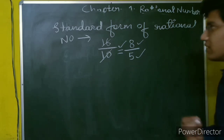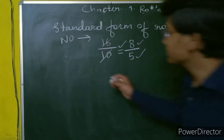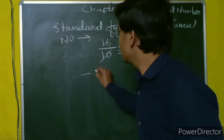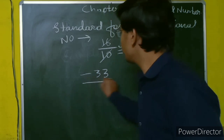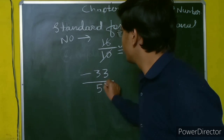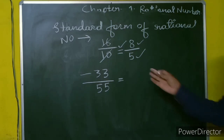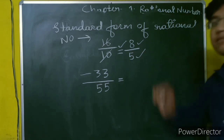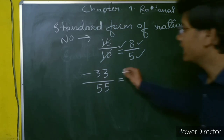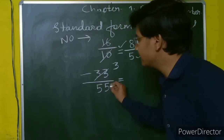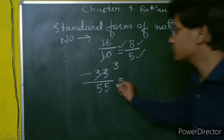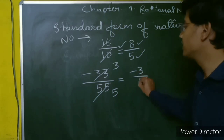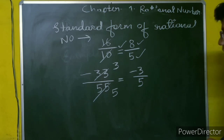Let's take another example: minus 33 upon 55. How can we convert it to standard form? We can see that 33 is in the 11 times table — 11 times 3 is 33 — and 55 is also in the 11 times table — 11 times 5 is 55. So our answer will be minus 3 upon 5. This is the standard form.